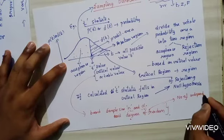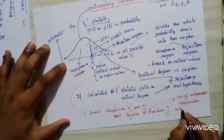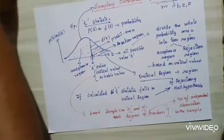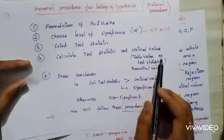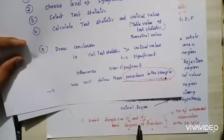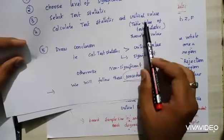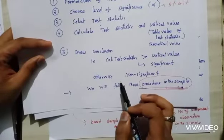Degree of freedom means the number of independent observations in the sample. We compare the test statistic value and critical value — if the test statistic value is greater than the critical value, then it is significant; otherwise, it is non-significant.